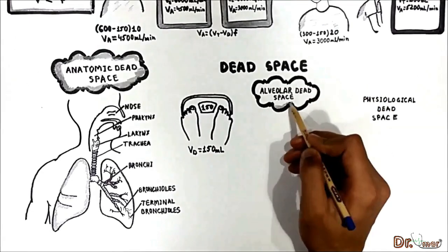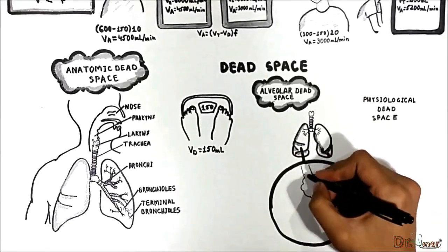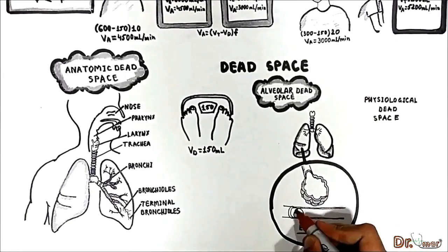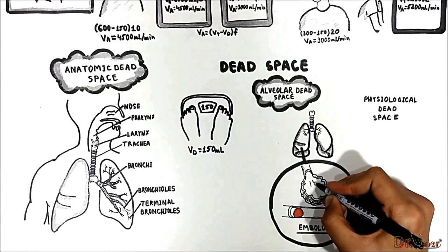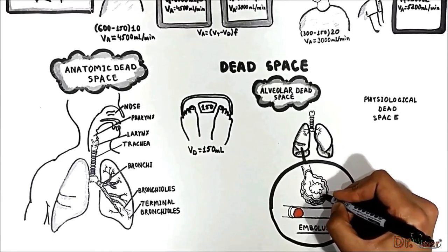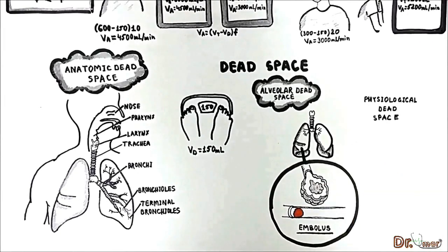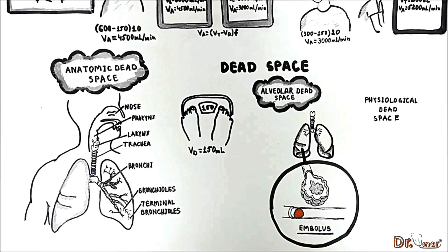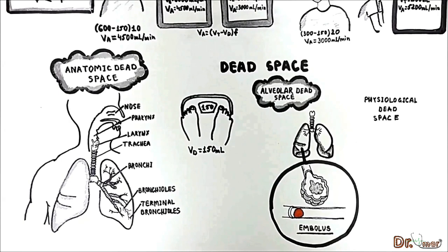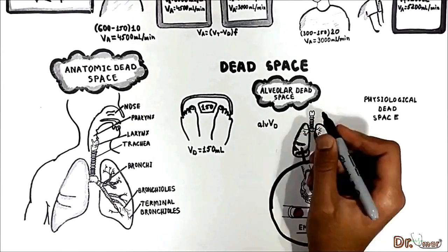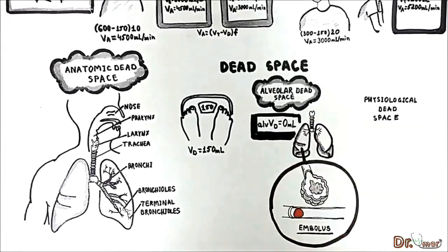Now let's talk about alveolar dead space. Sometimes an embolus may block an artery or arteriole in your lungs. As a consequence, blood flow to the alveoli is disturbed, and in spite of the presence of air in the alveoli, no gas exchange occurs. Therefore, from a functional point of view, these alveoli must also be considered dead space. Alveolar dead space refers to alveoli containing air but without blood flow in the surrounding capillaries. Under normal conditions, the alveolar dead space is considered to be 0 milliliters — there should not be alveolar dead space.